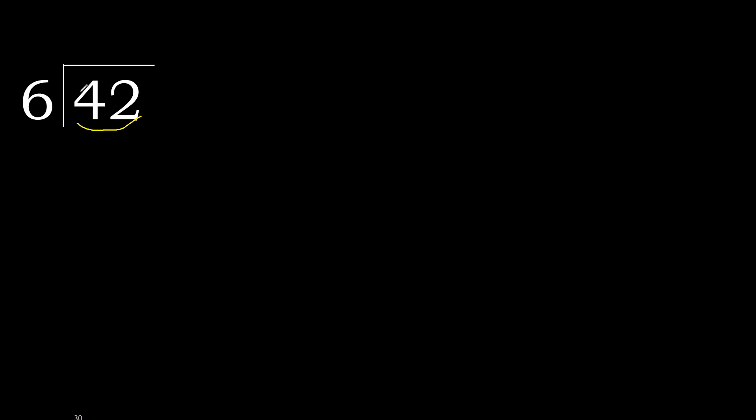Therefore with 42, 6 multiplied by which number is nearest to 42 but not greater? 6 multiplied by 8 is 48, which is greater. 6 multiplied by 7 is 42 — it's not greater.